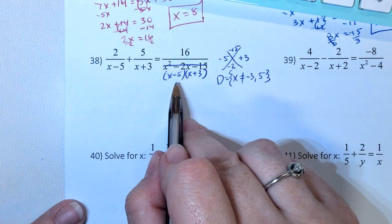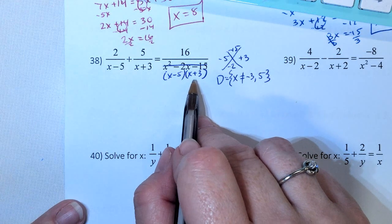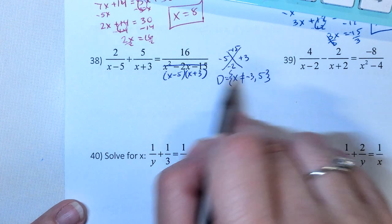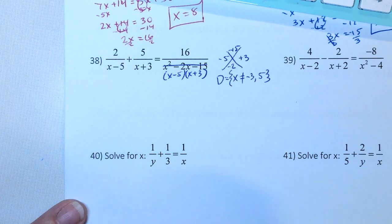So it's the same thing as setting these equal to 0. I'm just kind of skipping that step. Because x minus 5 equals 0, plus 5, can equal positive 5. Minus 3, can equal negative 3.